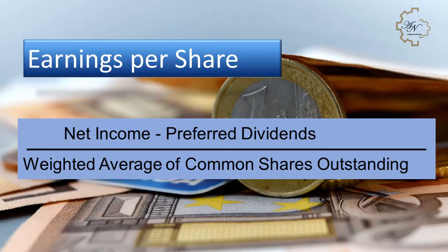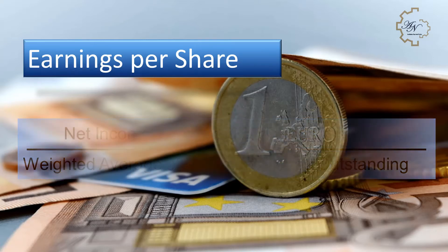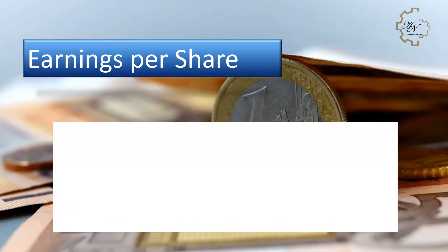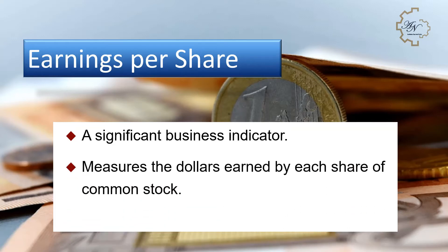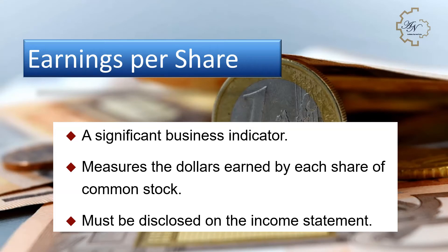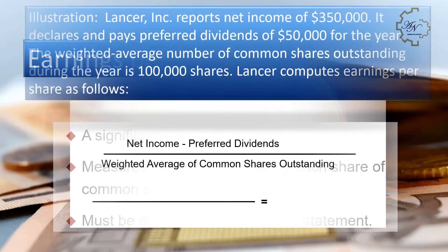Earnings per share equals net income minus preferred dividends, divided by the weighted average number of common shares outstanding. It is considered a significant business indicator that measures the dollars earned by each share of common stock, and must be disclosed on the income statement.